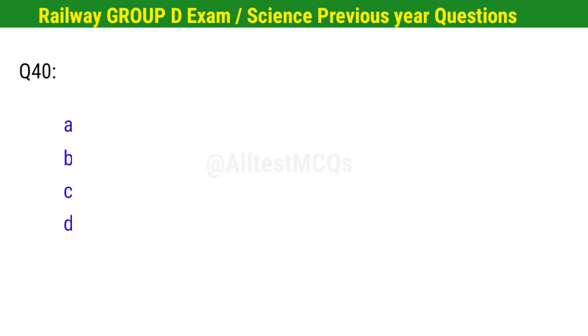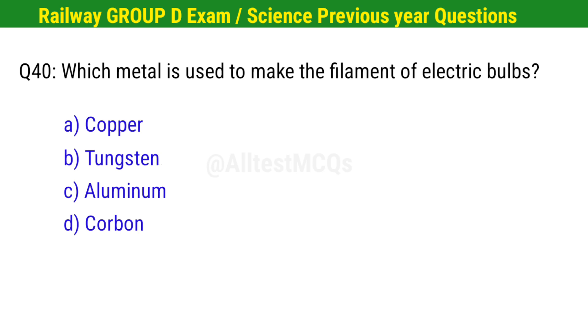Question No. 40. Which metal is used to make the filament of electric bulbs? Right option is B. Tungsten.